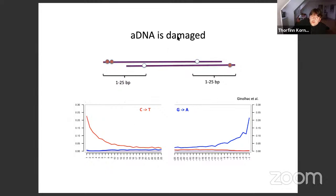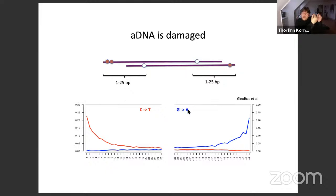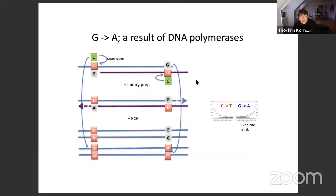When sequencing from one end, C turns into a T; from the other direction, a G turns into an A. This can be super complicated the first time people see this, even people who have gone to the lab sometimes get confused, because it's a product of how we do the sequencing and how DNA polymerases work. Briefly: what was originally a C-G pair gets turned into a T-A pair because C is damaged to U, which is interpreted as T, and T's complement is A.